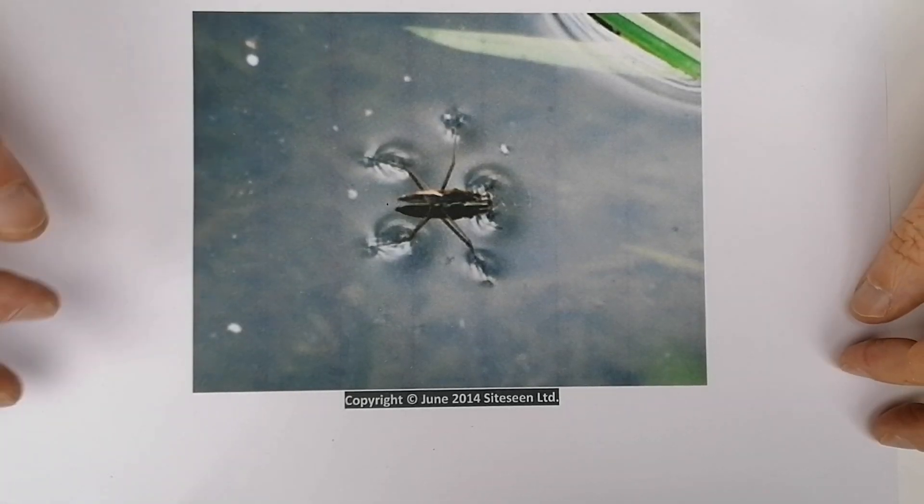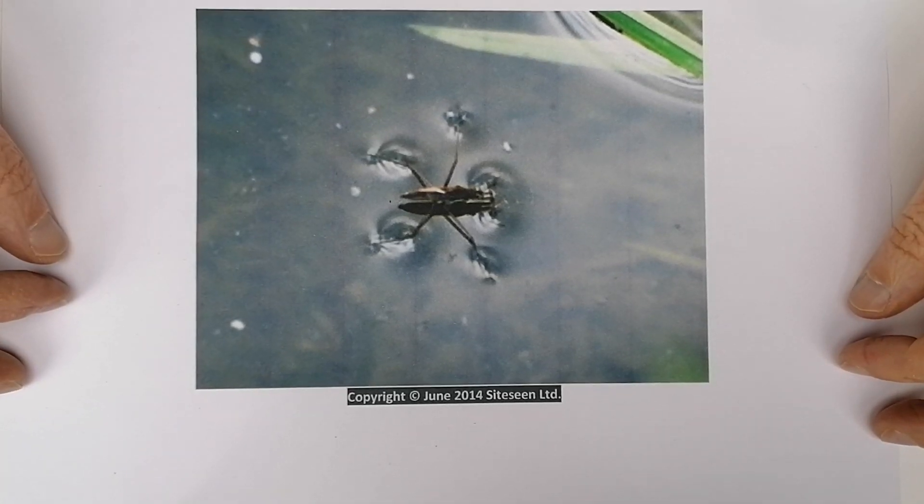Today we're going to make a pond skater. This is a picture of a pond skater. It's an insect that floats on the surface of the water.